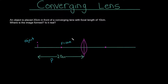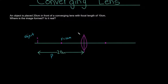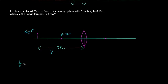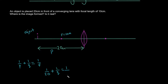Now that we know that, we can solve this problem. The equation we need to use is 1 over P plus 1 over Q equals 1 over the focal length. We know P is 20 centimeters, so 1 over 20. We don't know what Q is — that's the image distance, and that's what we're solving for. So we can write 1 over Q equals, and we know the focal length is 10 centimeters. We can write these as decimals: 1 divided by 20 is 0.05.